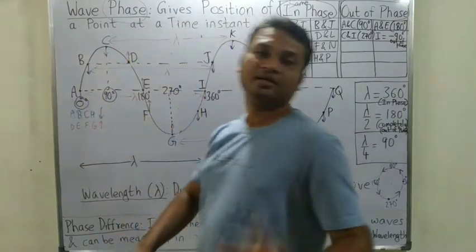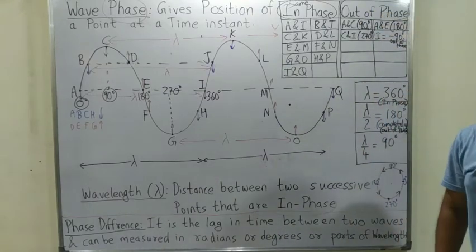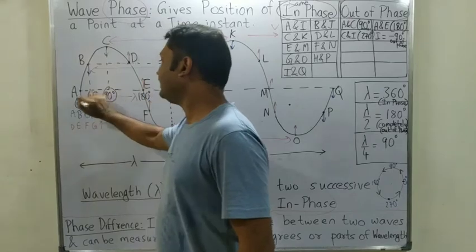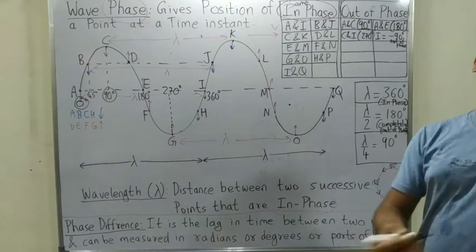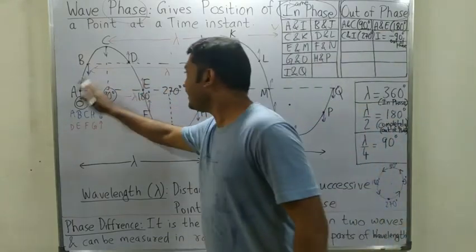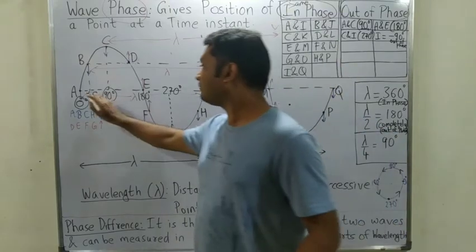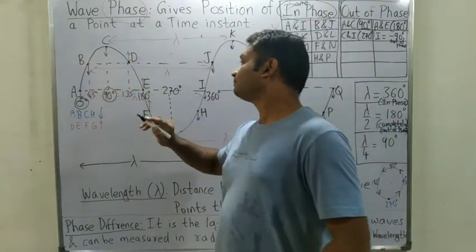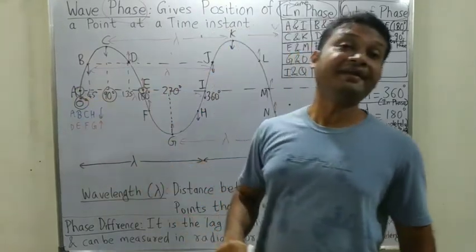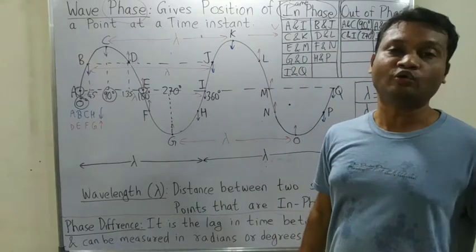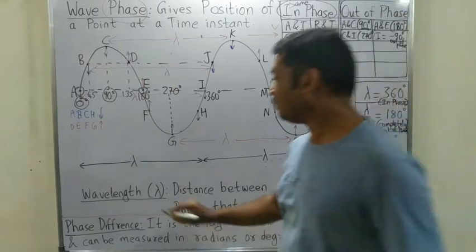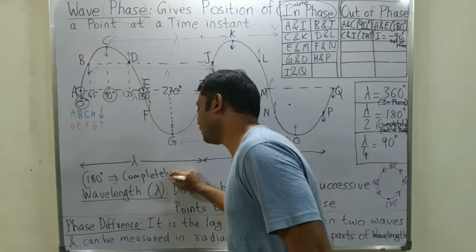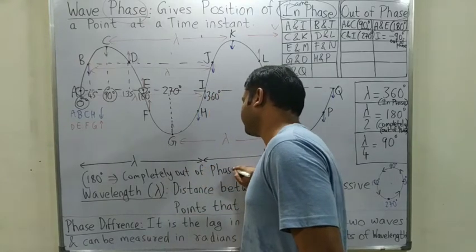The angle between A and C is 90 degrees — so A and C are 90 degrees out of phase. B point is at 45 degrees, so A and B are 45 degrees out of phase. A and D are 135 degrees out of phase. A and E are 180 degrees out of phase — this is called completely out of phase.